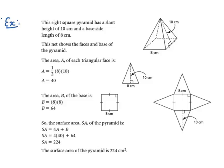Let's take a look at an example. Given this right square pyramid with a slant height of 10 centimeters and a base side length of 8 centimeters — since it's a right square pyramid, all sides of the base are exactly 8 centimeters. Our goal is to find the surface area. The first thing we'll do is find the area of one of the triangles.